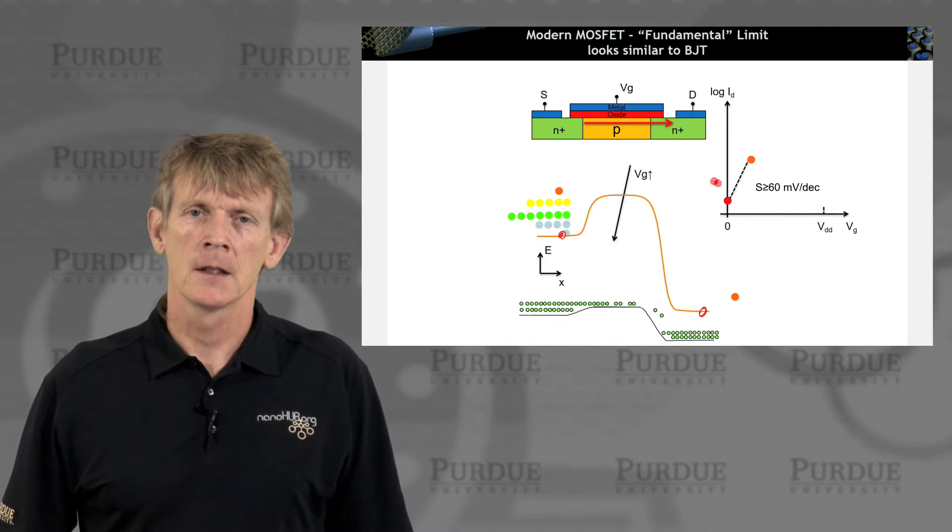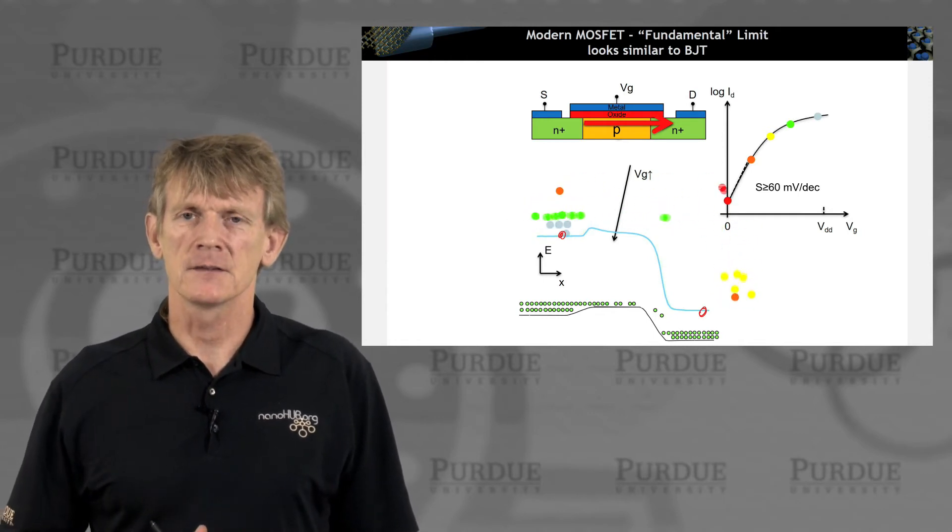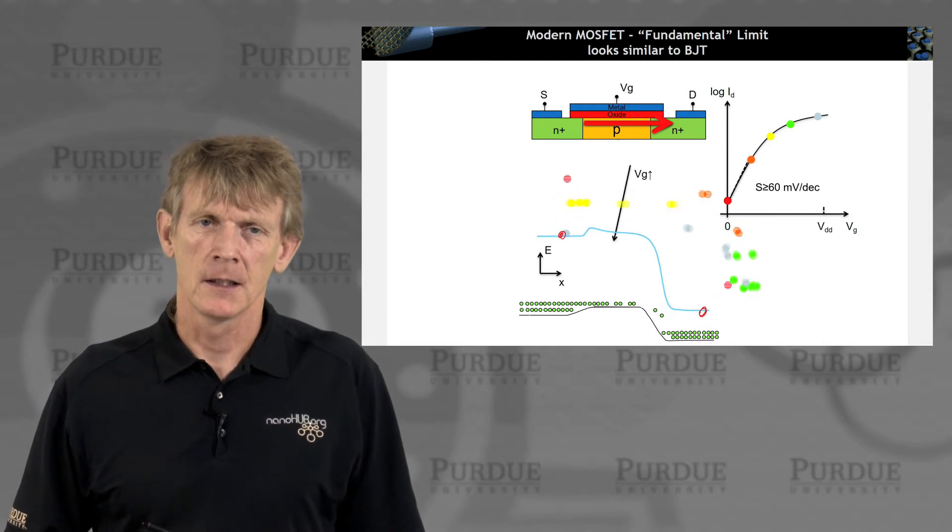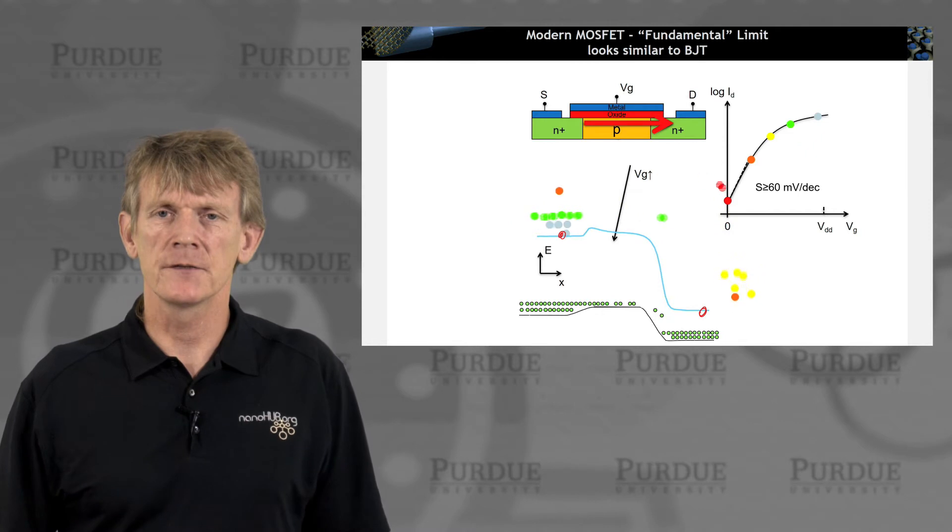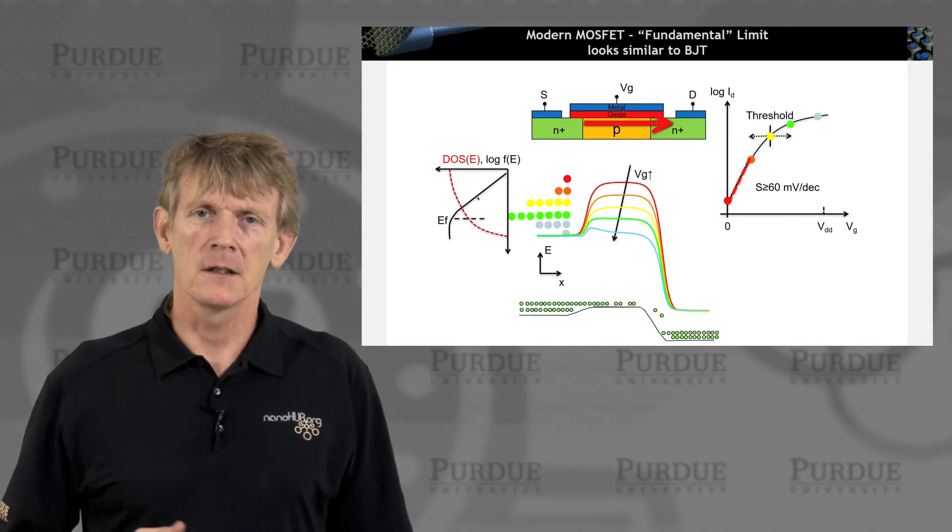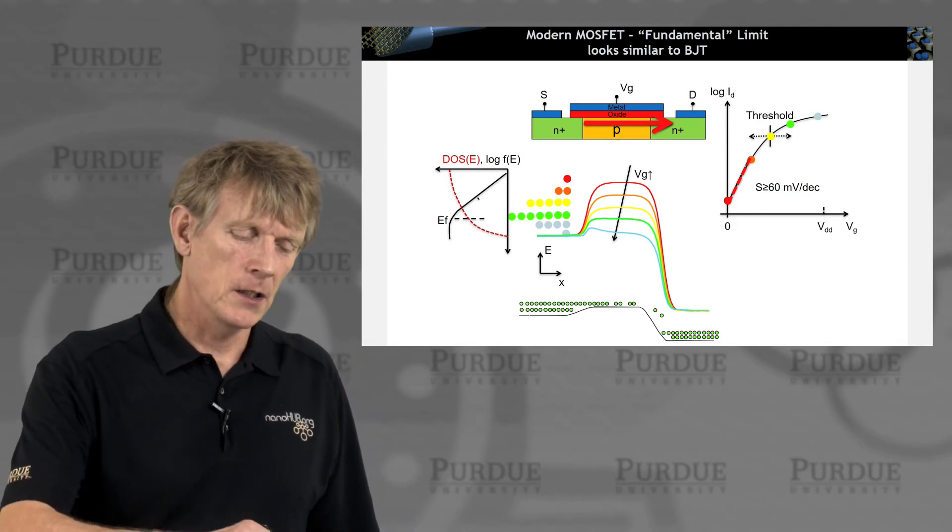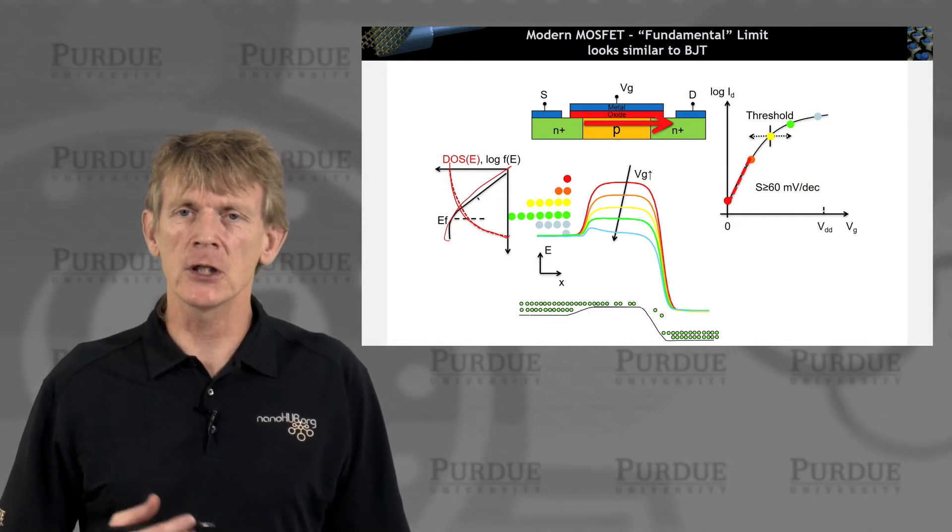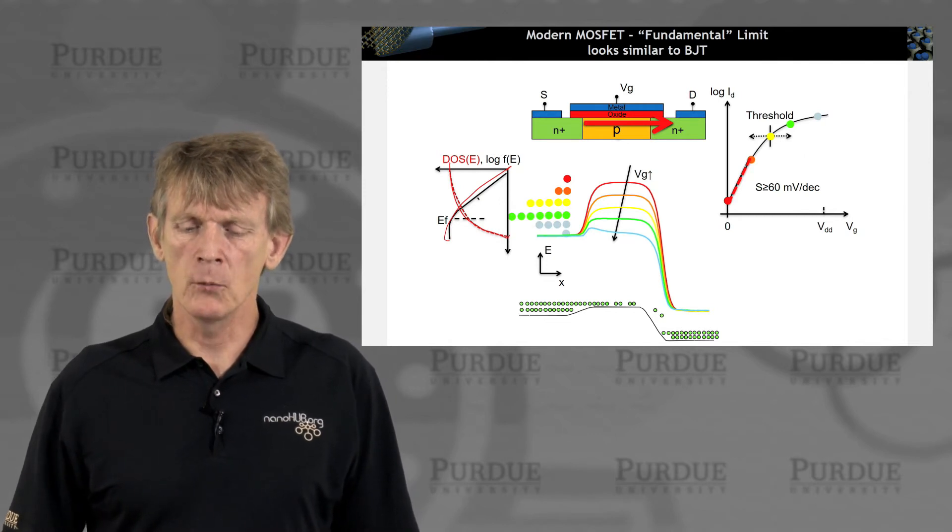As you increase the gate voltage you allow more carriers to flow and the current rises at a certain level. You'll see where the BJT, the 60 millivolt per decade, comes from very soon. And as you increase the voltage further, you eventually provide all the current that you can provide in this device. You basically open the channel and you're beginning to saturate. This is just a pictogram to give you a feeling for how electron flows in this device.